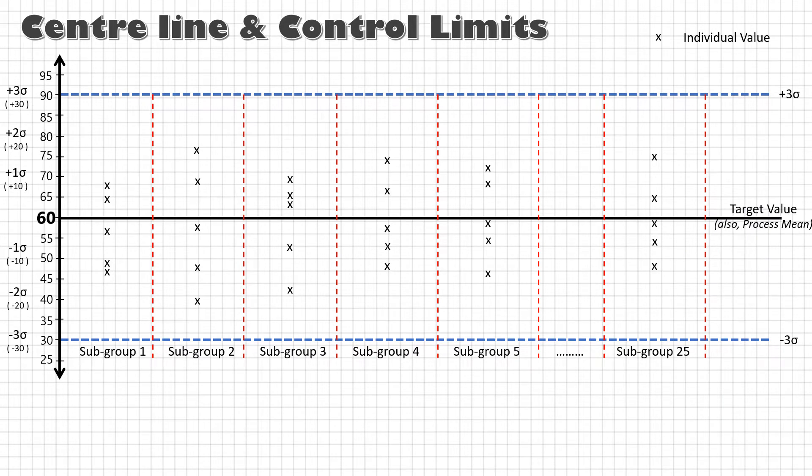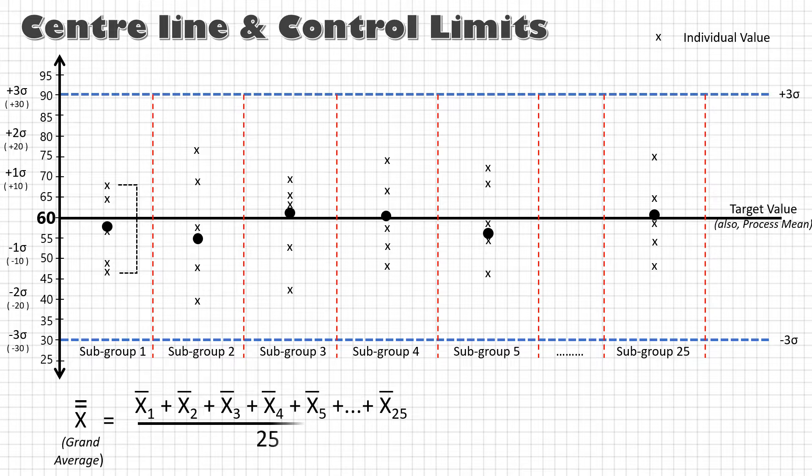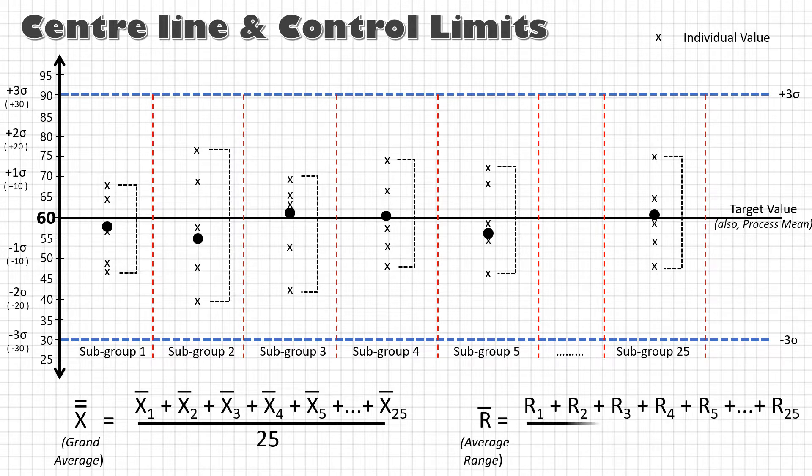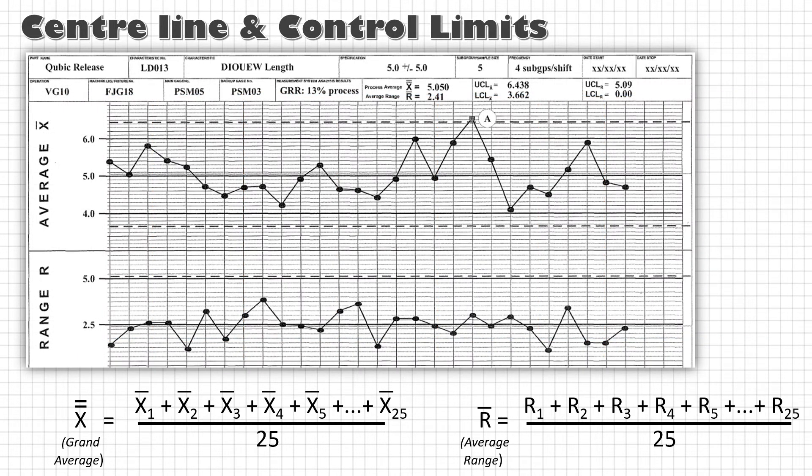As we know subgroup average of these five samples is known as x bar and the difference between the max and minimum value of these five samples in a subgroup is called range R. Now we calculate grand average x double bar by dividing the sum of these x bars with number of subgroups k that is 25 and similarly we calculate the average range R bar by dividing the sum of these individual range with 25. This x double bar acts as a center line for average chart and R bar for the range chart.